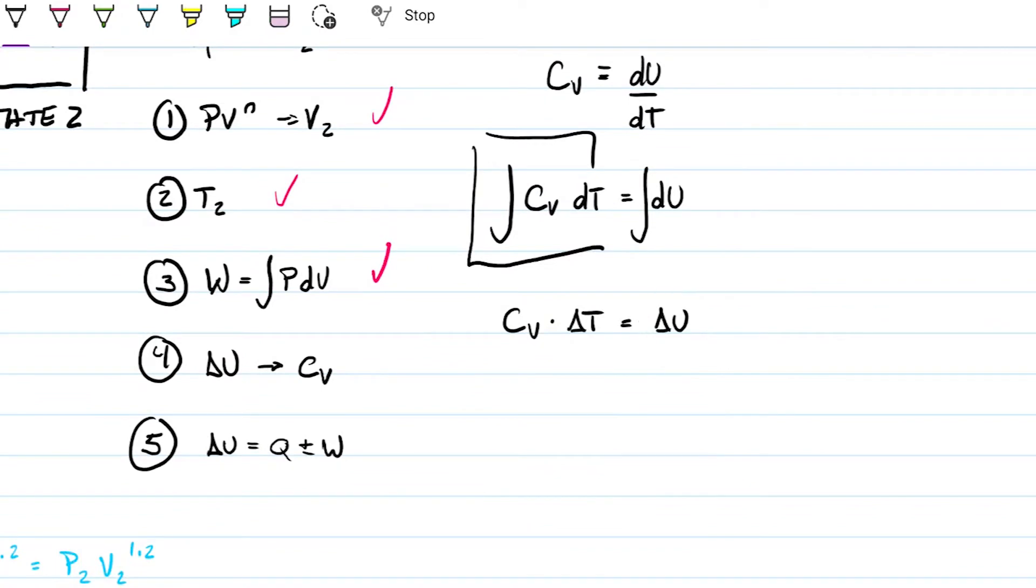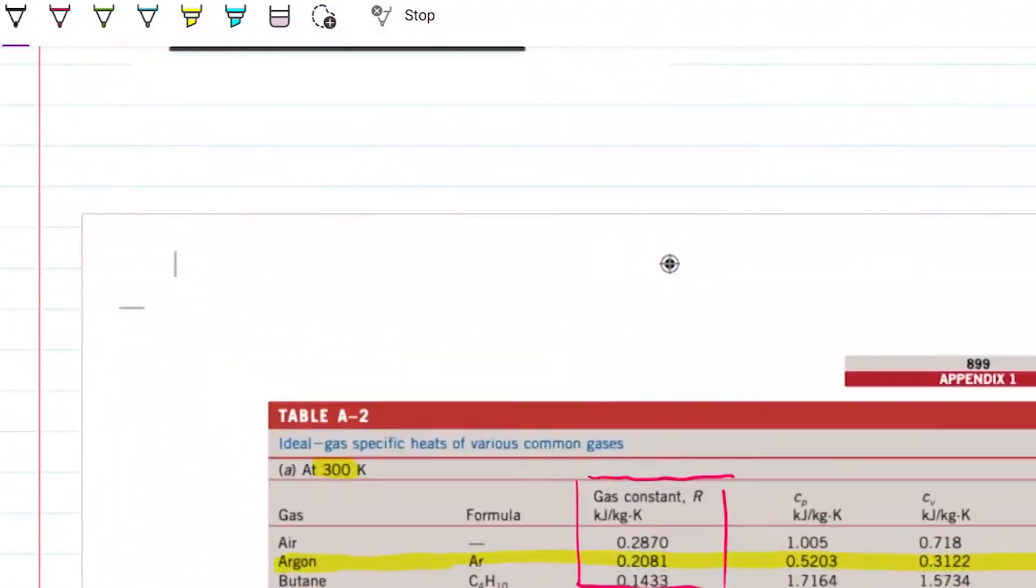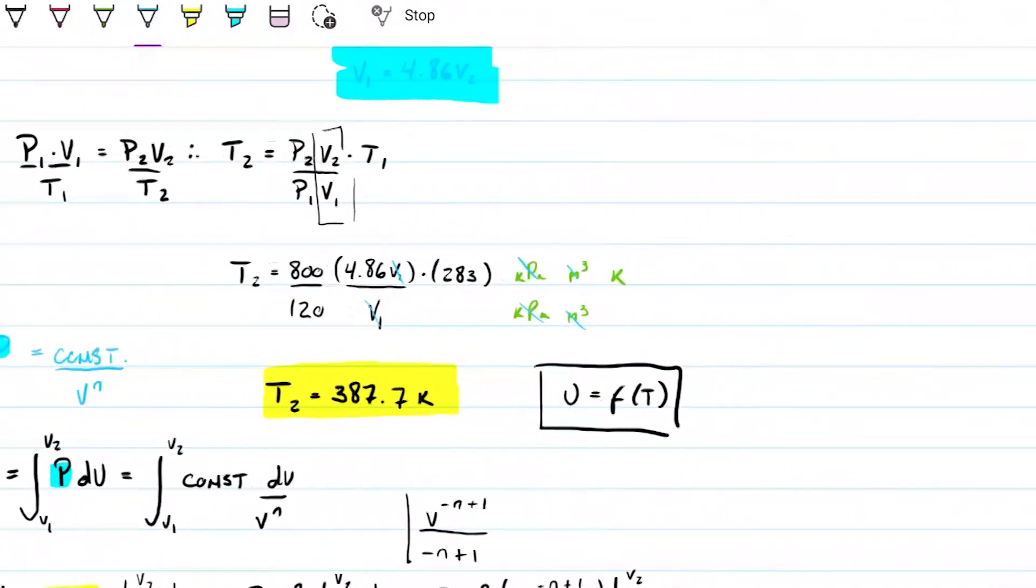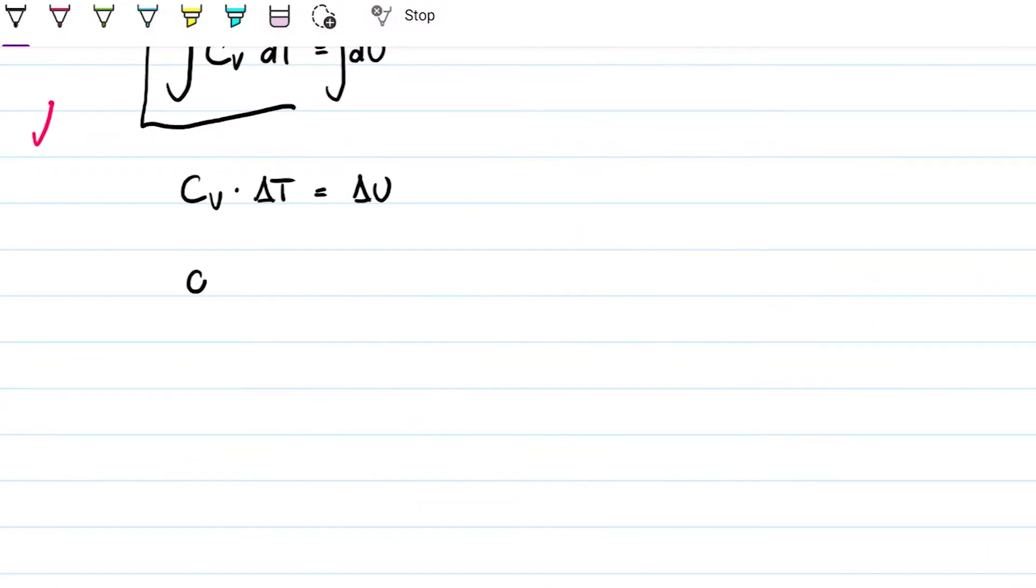So if I want my difference in internal energy lowercase, I'm going to have to use my c sub v, which is here. C sub v here is 0.3122. 0.3122, difference in temperature 387.7 minus 283. That's what we put for my lowercase delta u.